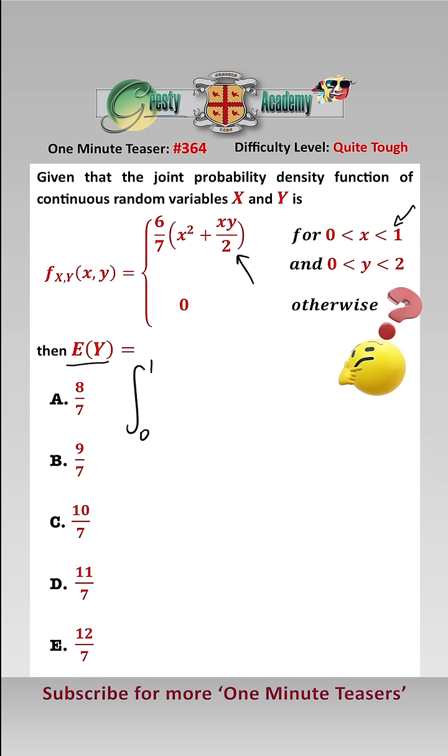of our probability density function: 6/7(x² + xy/2) dx. That equals 6/7[x³/3 + x²y/4] between 0 and 1, which equals 2/7 + 3y/14.